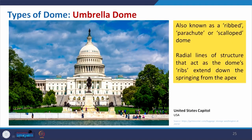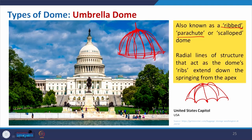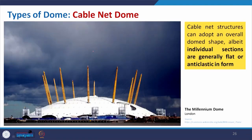The umbrella dome is also known as a ribbed or parachute dome. We know the form of a parachute or umbrella. It starts with a simple dome and the ribs guide it to take the form of an umbrella. The United States Capitol building is an example of the umbrella dome.